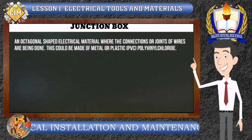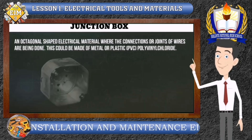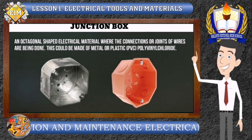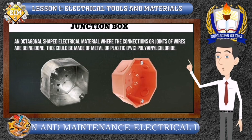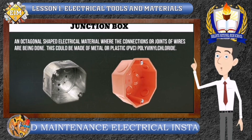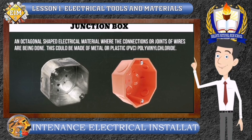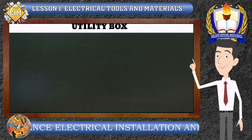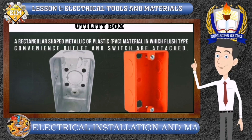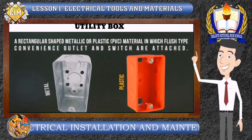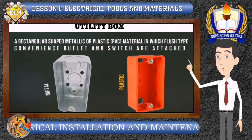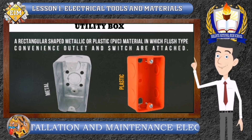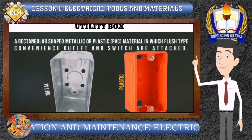Junction Box. A junction box is an octagonal-shaped electrical material where the connections or joints of wires are made. This could be made of metal or plastic PVC (polyvinyl chloride). Utility Box. A utility box is a rectangular-shaped metallic or plastic PVC material to which flush-type convenience outlets and switches are attached.